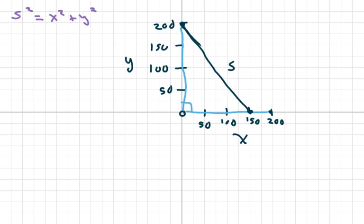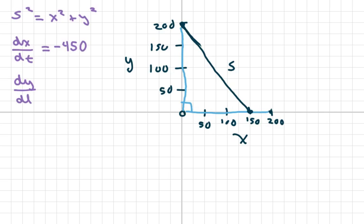I know that the derivative of X with respect to time equals negative 450. And the derivative of Y with respect to time is negative 600.